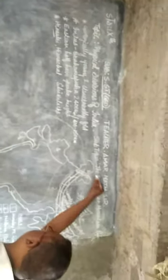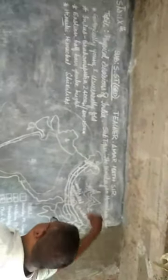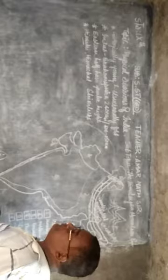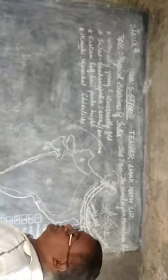You can find that the Himalayas are in the form of an arc. The Himalayas are found in an arc shape and have three parallel ranges: Himadri, Himachal, and Shivalik.